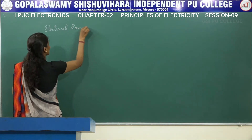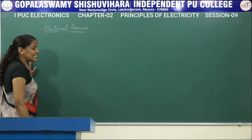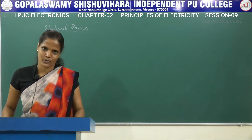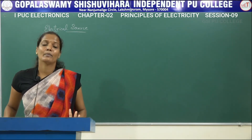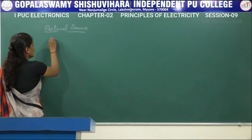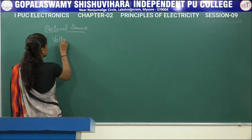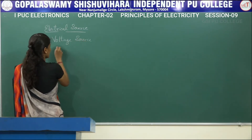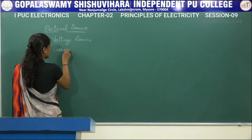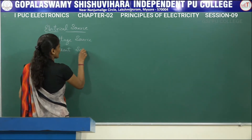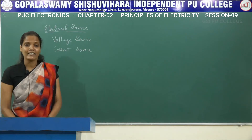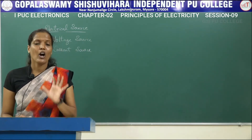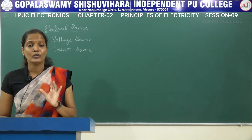So what is this electrical source? It is nothing but a device which provides electrical energy to the circuit. These electrical sources are broadly classified into two types. One is called the voltage source, and the other one is called the current source. A voltage source is a device which gives a constant voltage to the circuit or to the load.